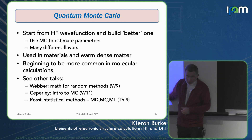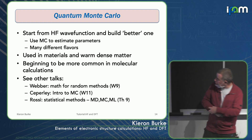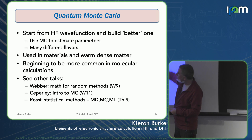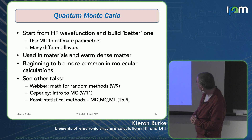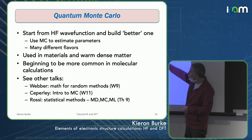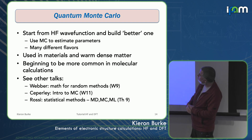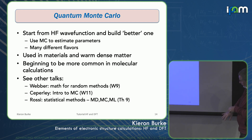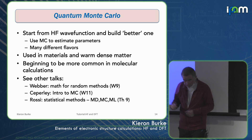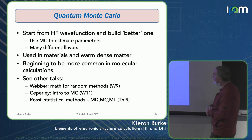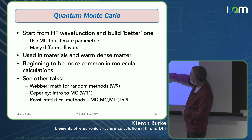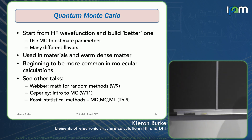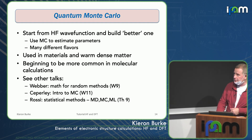Quantum Monte Carlo is used quite a bit in condensed matter. It's used in warm dense matter — usually solids at higher temperatures, anywhere between 30,000 and a million degrees, where the chemistry is still important, so it isn't in a full plasma state. People use Monte Carlo a lot there, and also in quantum dynamics, not just for the electronic structure.